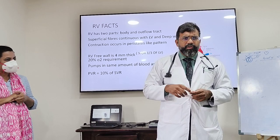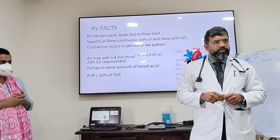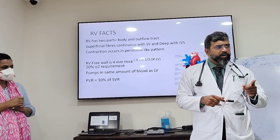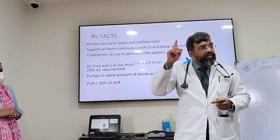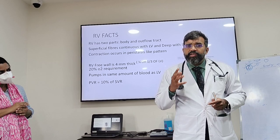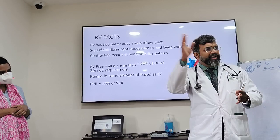If you have RV failure and you go to intubate the patient, blood pressure drops. What happened yesterday to that patient we intubated? Immediately the blood pressure dropped. Because by putting in positive pressure, you increased the pulmonary pressures. Since you increased the pulmonary pressures, the RV does not have the capacity to pump blood into the pulmonaries. Since it cannot pump, the LV doesn't get blood and the blood pressure drops.